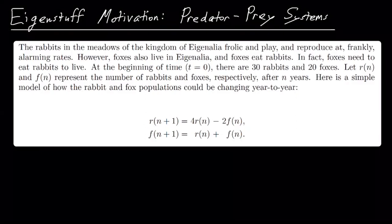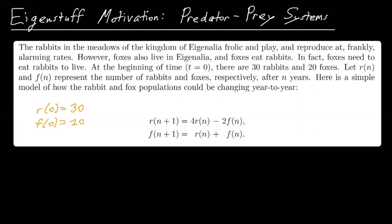And r(n) and f(n) represent the number of rabbits and foxes respectively. So for example, this says that r(0) is 30 and f(0) is 20, and it's the population after n years, r(n) is the number of rabbits after n years. And this thing, this system here is called a discrete dynamical system.